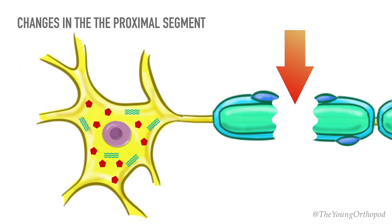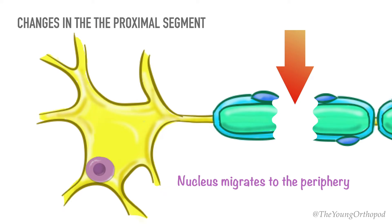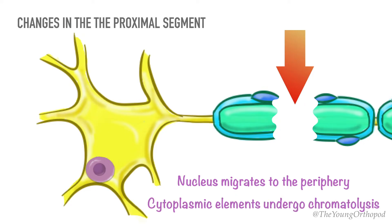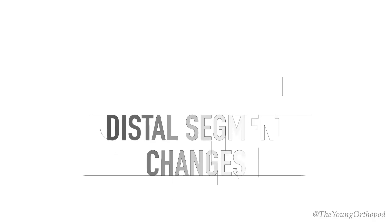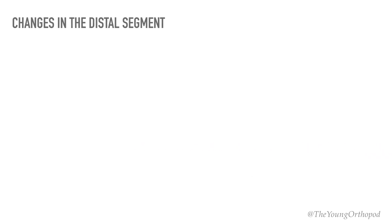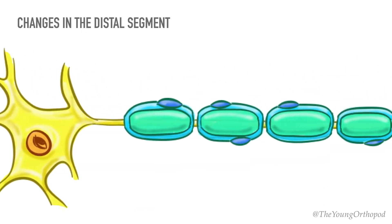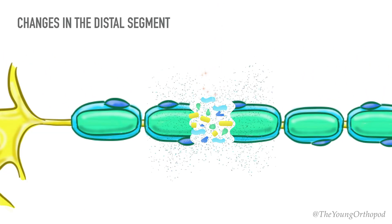If the nerve cell body survives, the nucleus migrates to the periphery of the cell and cytoplasmic elements like Nissl granules and endoplasmic reticulum undergo chromatolysis. The cell survival is dependent upon the Schwann cells and trophic molecules present in the vicinity.